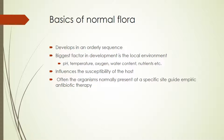Just a couple of basics to review before we go through what bugs are where for the normal flora. We know the normal flora develops in an orderly sequence starting at birth, leading to stable populations by the time you reach adulthood. The factors that affect what bacteria grow where and how well they do there are the factors that affect the local environment — things like pH, temperature, oxygen, and water content, as well as what nutrients are available at each specific site.